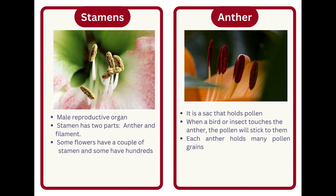Stamen. The male reproductive organ. Stamen has two parts: anther and filament. Some flowers have a couple of stamens and some have hundreds.